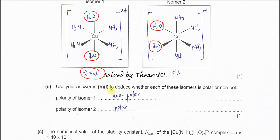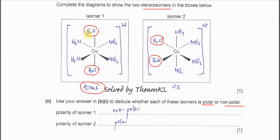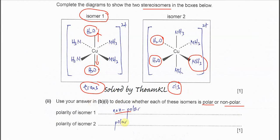Part two: use your answer in part one to deduce whether each isomer is polar or non-polar. This depends on whether the dipoles cancel or not. For the trans isomer, the same ligands are opposite each other, so their dipoles cancel out — there is no net dipole, making it non-polar. For the cis isomer, the H₂O and ammonia ligands are different, so the dipoles do not fully cancel, making it polar.